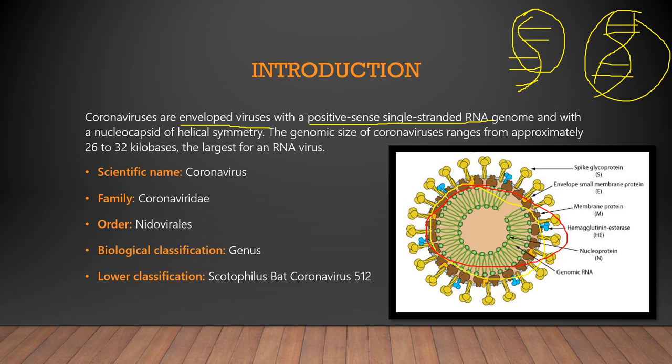The RNA inside the coronavirus is represented by frilly green strands, and nucleoproteins help in securing it. The coronavirus has a spike glycoprotein which is very important, as it helps the coronavirus infect other cells. It latches onto proteins present on the cell surface and grips onto those proteins to enter the cell.